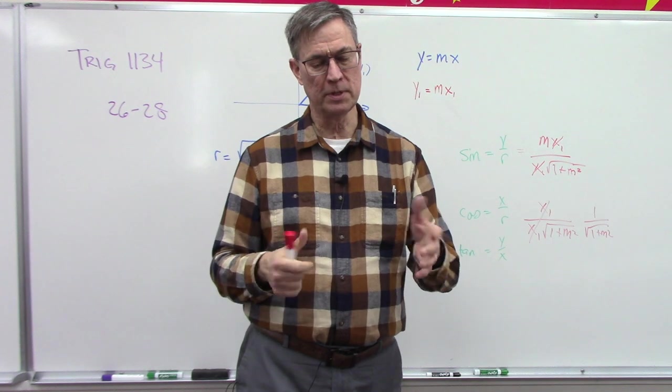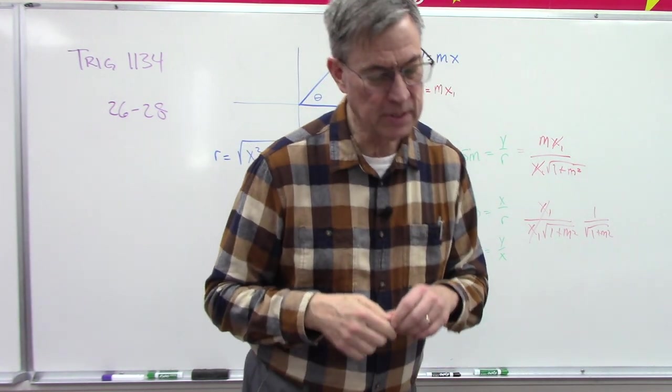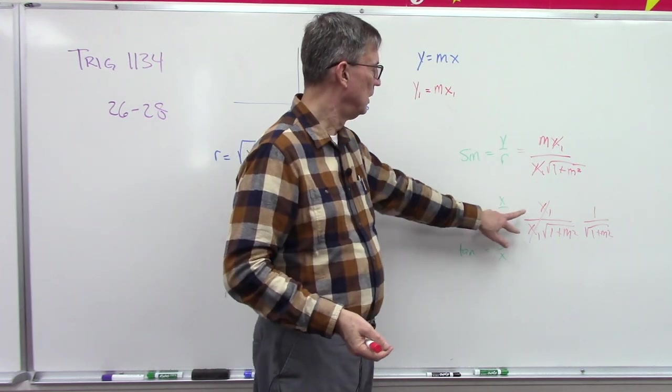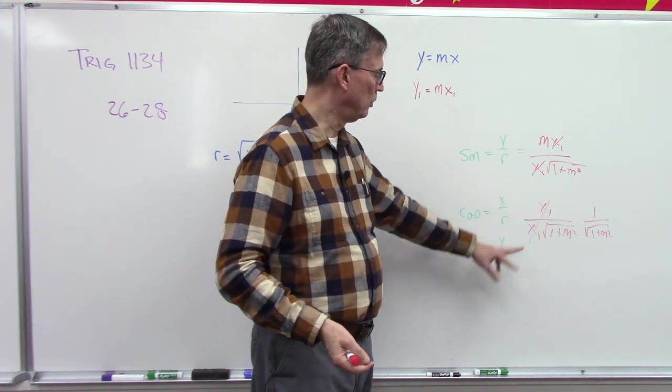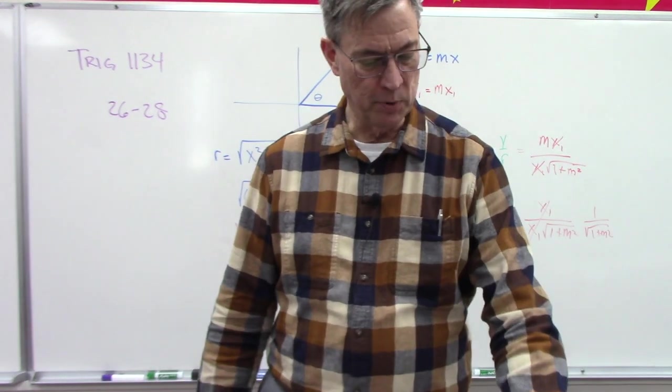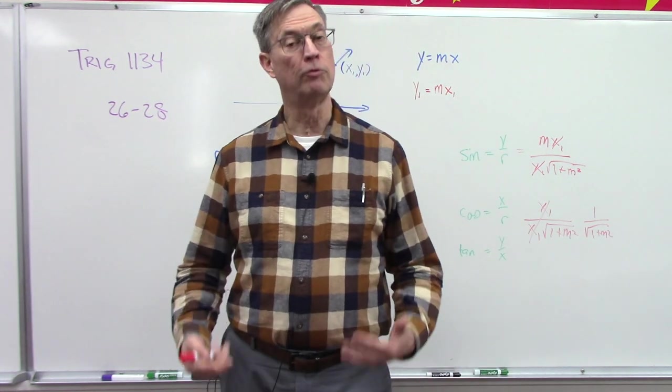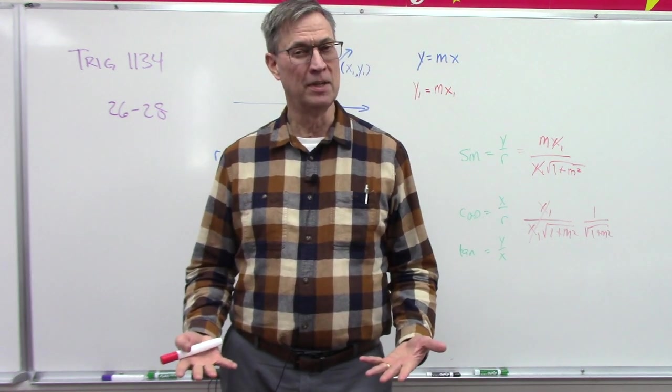And then I'm not going to go through the steps, but you can see there on page 27 the cosecant would be the reciprocal of this, and then cotangent is the reciprocal of tangent, so they come up with in blue text on page 27 all of those formulas. Did you follow with me?